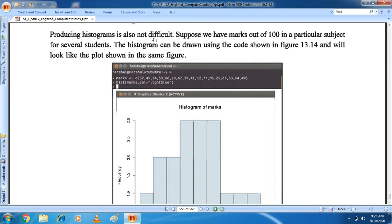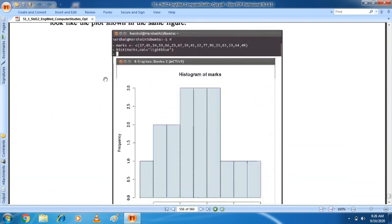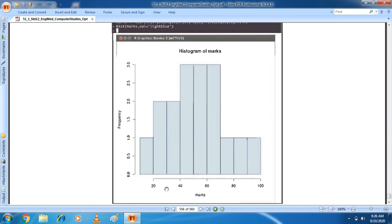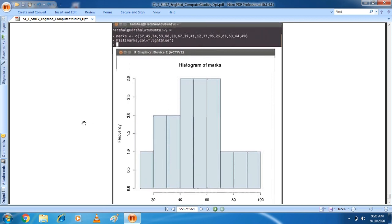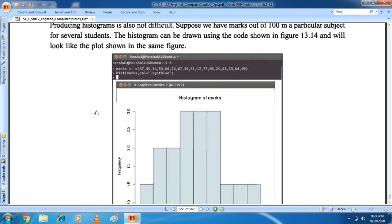Producing histogram is also not difficult. Suppose we have marks out of 100 in a particular subject for several students. The histogram can be shown using the code shown in figure 13.14 and will look like the plot shown in the same figure. Students, you can see here. Here they have a histogram produced in R software. Now here they have made the average. First of all, they have marks in the class. And here they have the frequency. Frequency, which is the average of the marks in the class. At a number of every gram, out of 20 marks, how many? 20 to 40, how many? 40 to 60, how many? Just at a number of every sequence. This is the number of marks. Okay students.